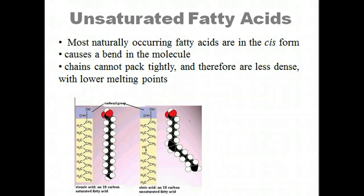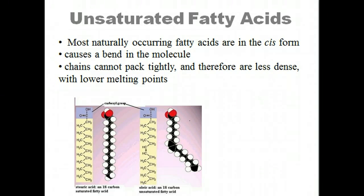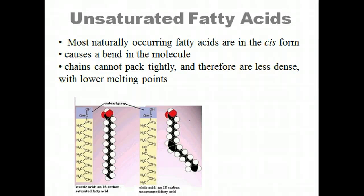Like saturated fats, unsaturated fats are made of a long chain of carbon atoms, typically an even number from 12 to 26. A chain of a fatty acid will have a carboxylic acid group at one end. Unlike saturated fats, unsaturated fats such as omega-6 fatty acids have at least one double bond, which means they tend to be liquid and oily at room temperature.